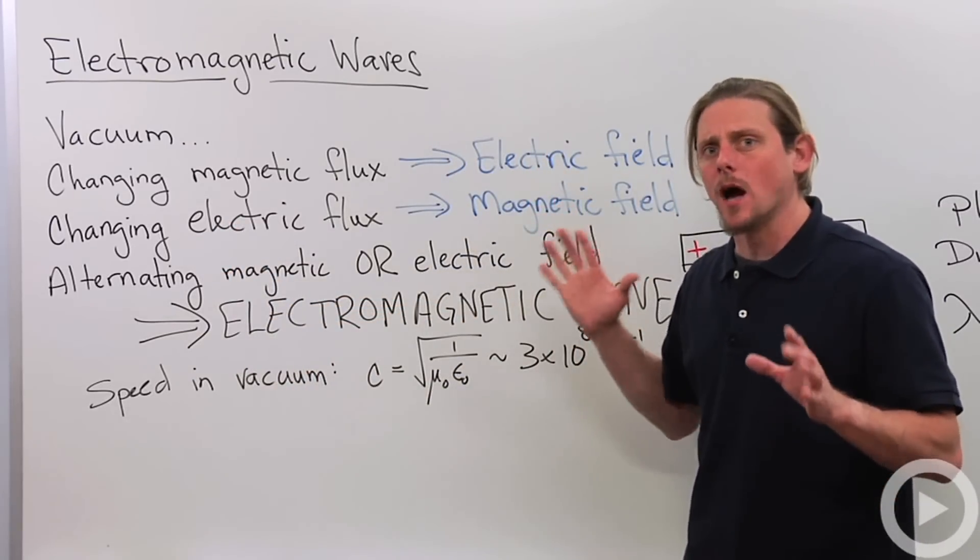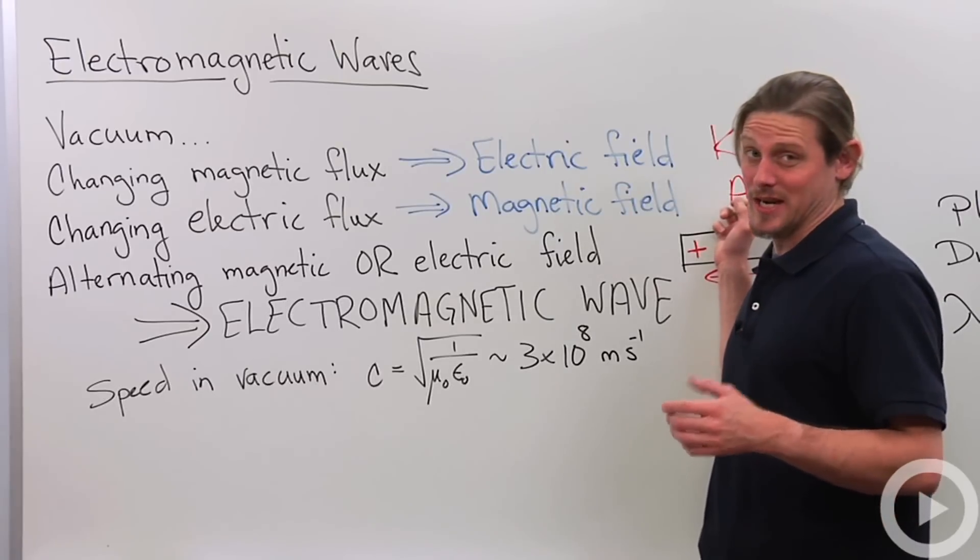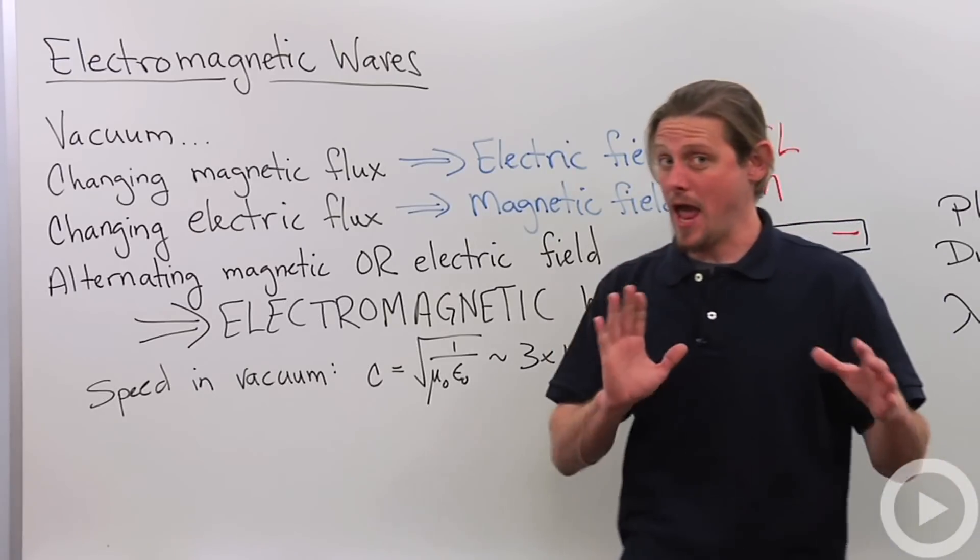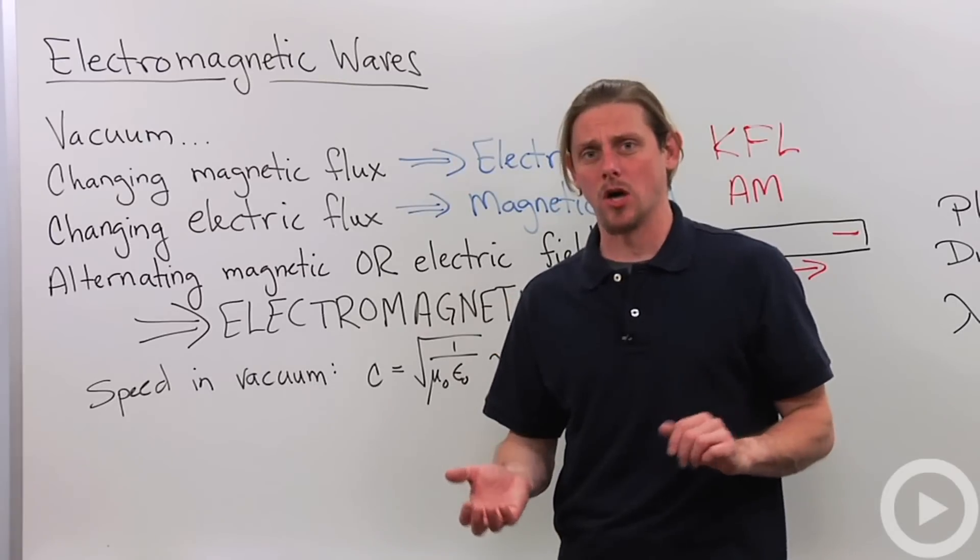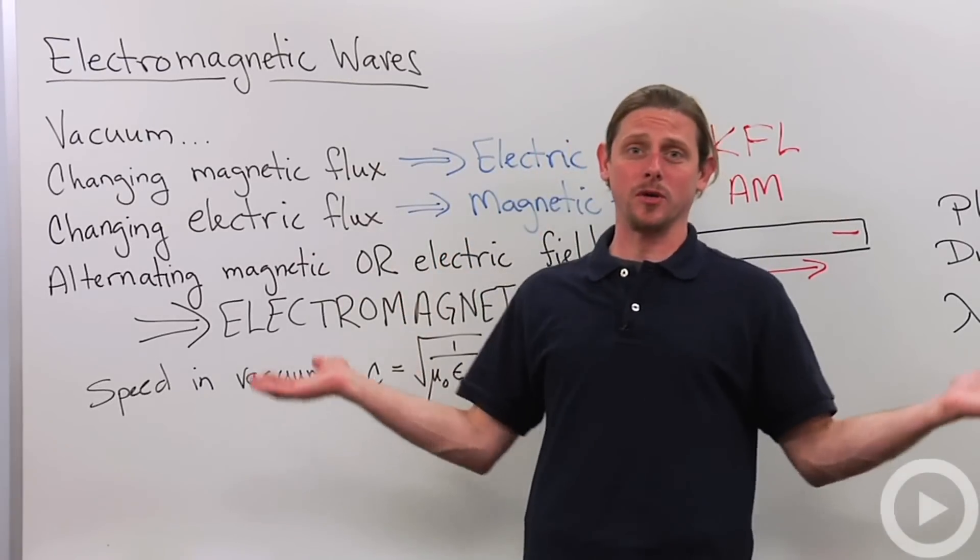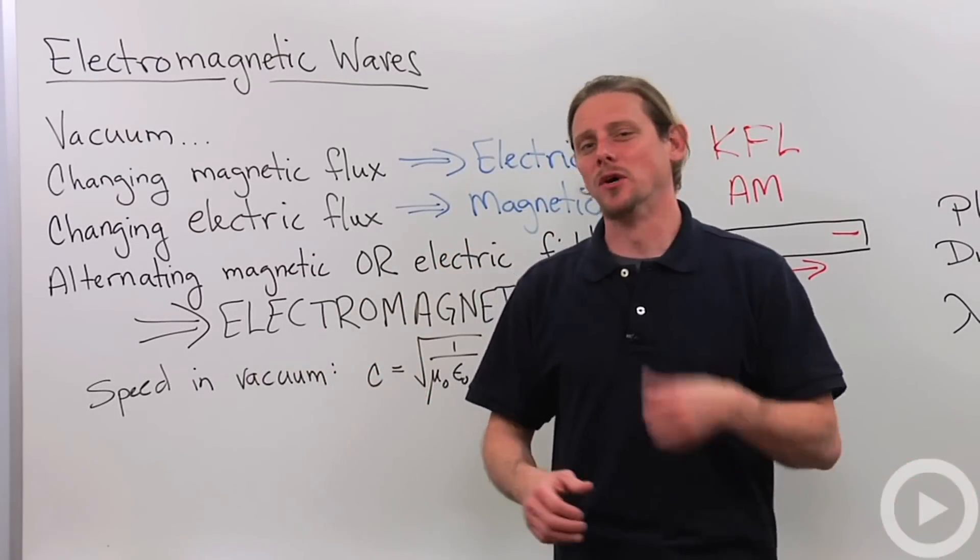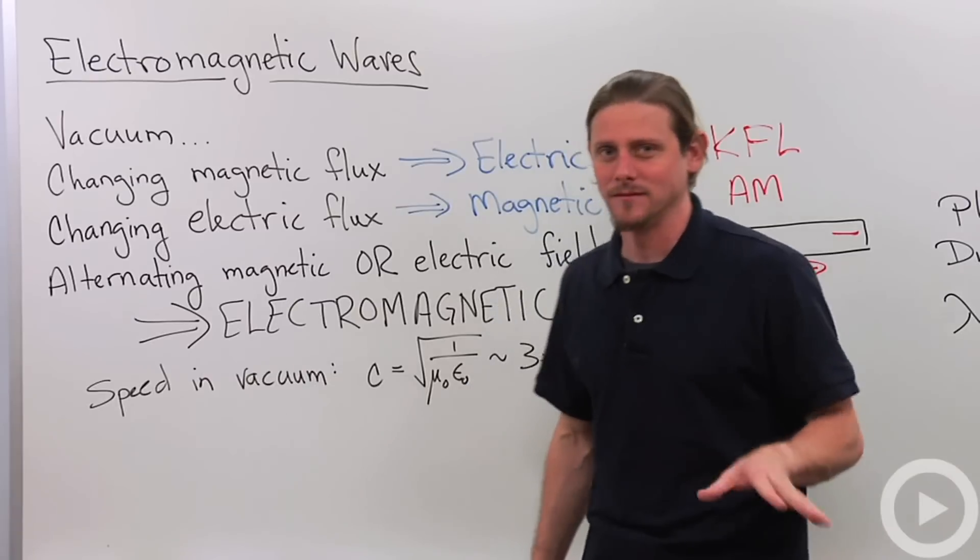So what this does well first off it changes the name of Ampere's law to the Ampere Maxwell law and together with that all four of the previous laws were brought together and are all referred to as Maxwell's laws. So James Clerk got a lot out of that discovery.